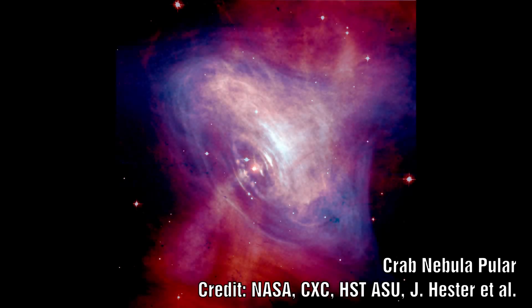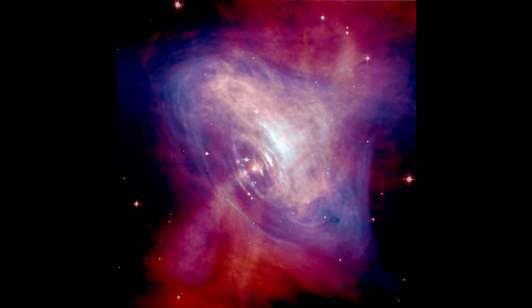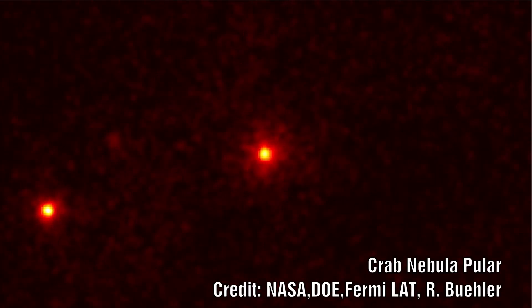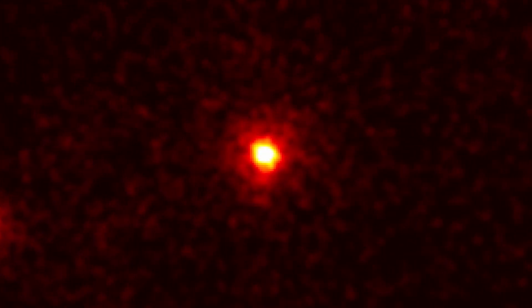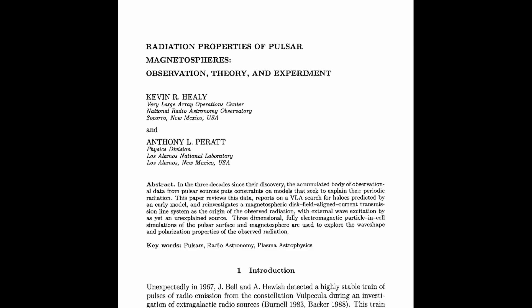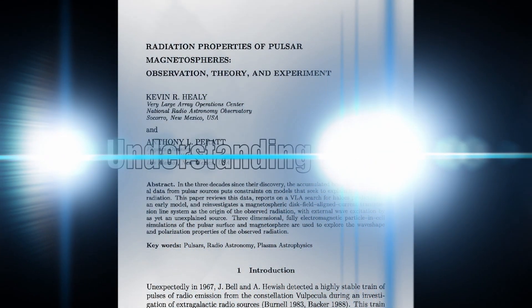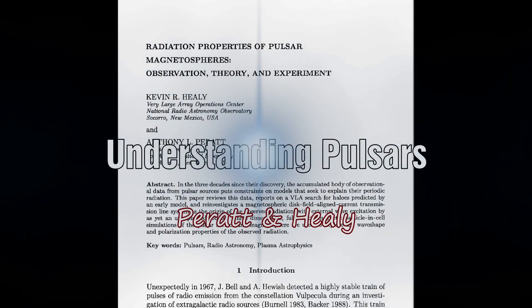We have discussed pulsars before and loosely covered some of the concepts about what they might be, but never really dived into the detail of why they pulse and what alternative theories there are and what gaps there might be. I would like to spend some time going over Pratt and Healy's concept for the radiation emissions from pulsars and then discuss some of the open questions that exist around how this would fit into the electric star concept.